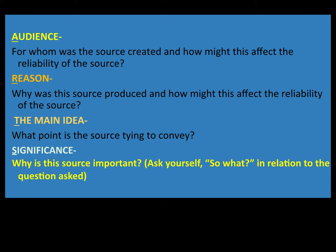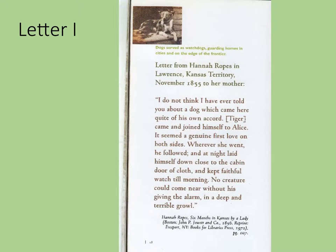We're going to read some letters about dogs from the time period of roughly 1850 to 1905. Letter one is from Hannah Ropes in Lawrence, Kansas Territory — not even a state yet — dated November 1855, written to her mother. So we already know the author, the audience, the date, and the location.